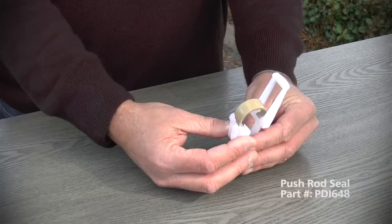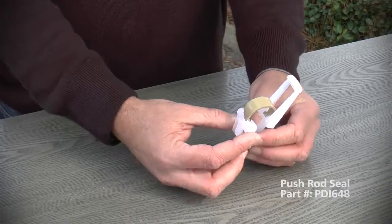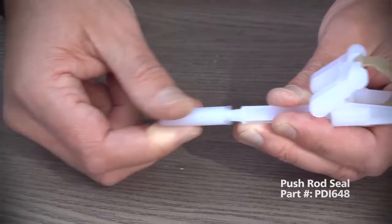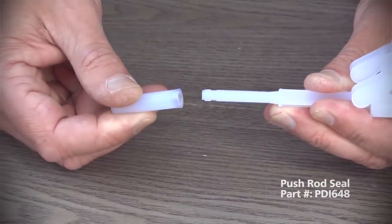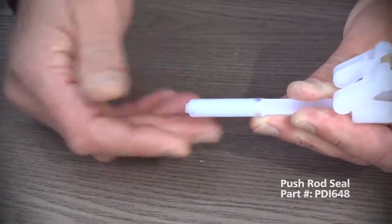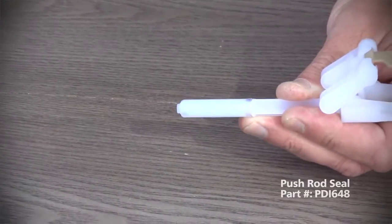We suggest replacing the push rod seal at this time. To remove, just grasp and twist it counterclockwise a quarter turn. To replace it, carefully slide the new push rod seal onto the push rod as far as it will go and twist a quarter turn clockwise.